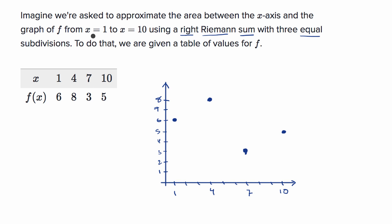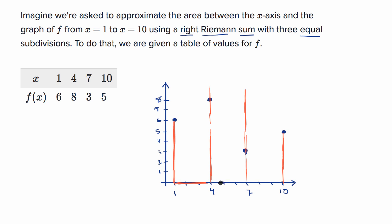We're thinking about the area from x equals one to x equals 10. We want three equal subdivisions — and there are three very natural subdivisions here if we make each one three wide. We've divided from one to ten into three equal sections that are each three wide. If we were doing a left Riemann sum, we'd use the left boundary of each subdivision to define the height of the rectangle. But we're doing a right Riemann sum, so we use the right boundary of each subdivision to define the height.